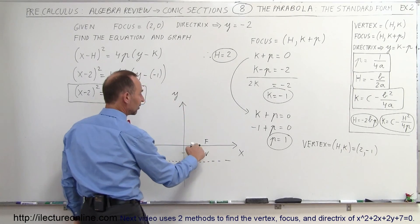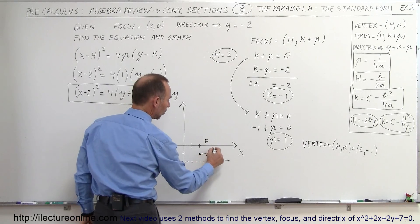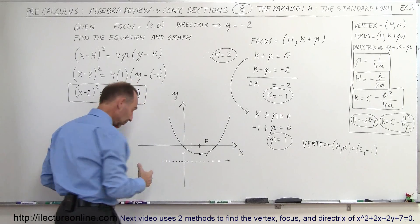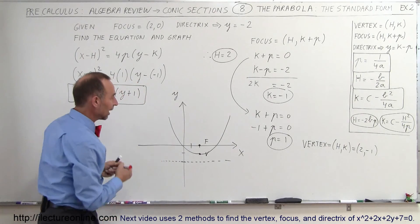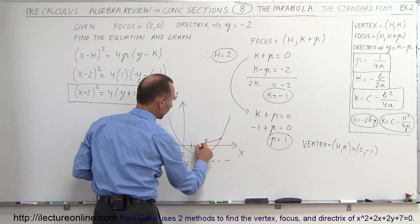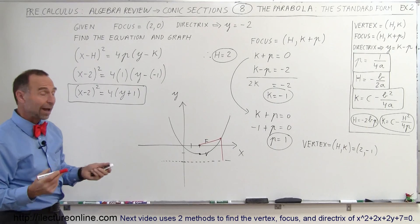So here's the vertex, there's the focus, there's the directrix, which means the parabola should open upwards like this. Again, with the same concept that any point on the parabola is the same distance away from the focus as it is from the directrix. And that looks pretty good right there. And so there's the graph.